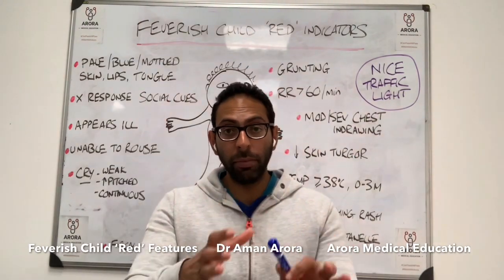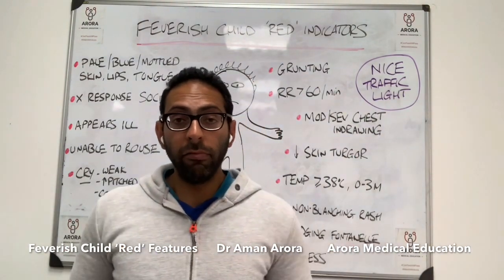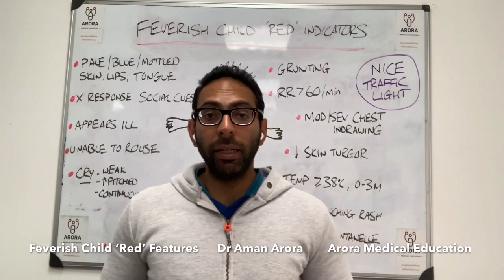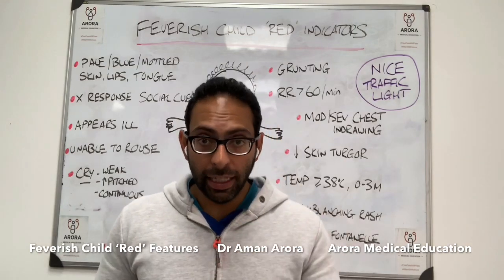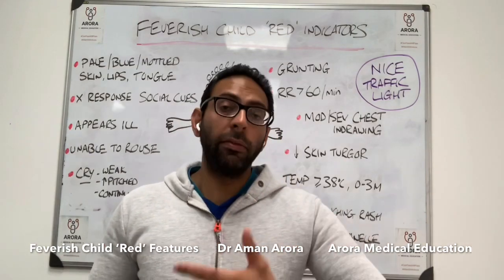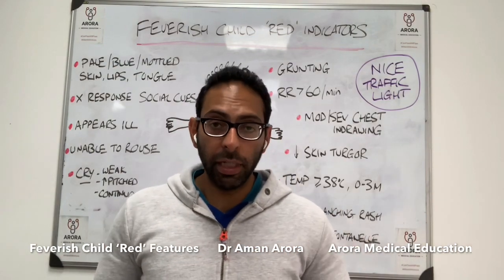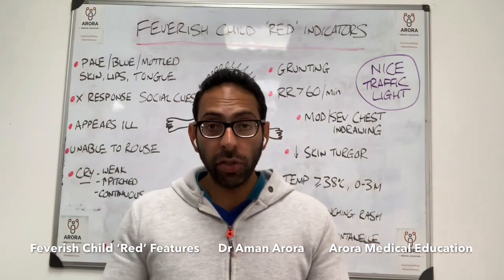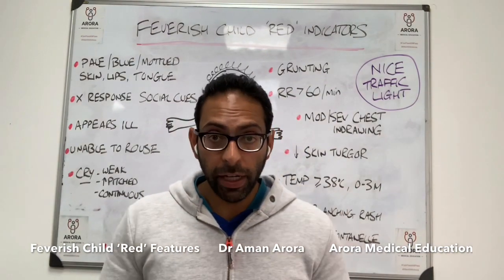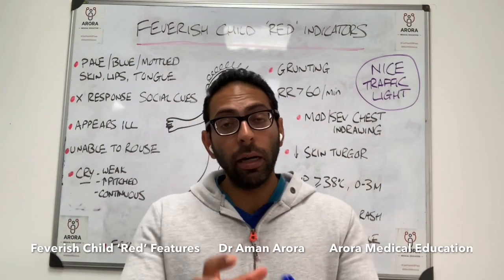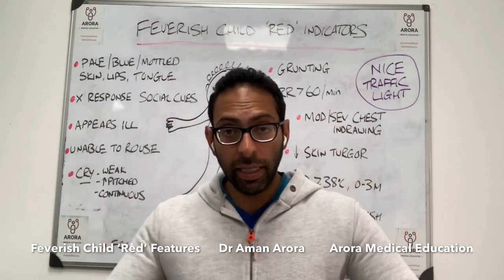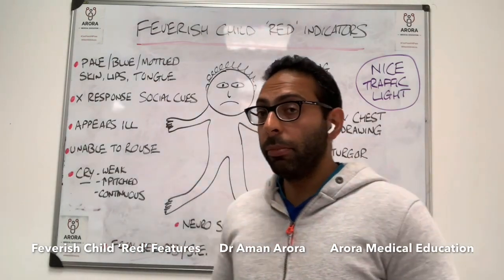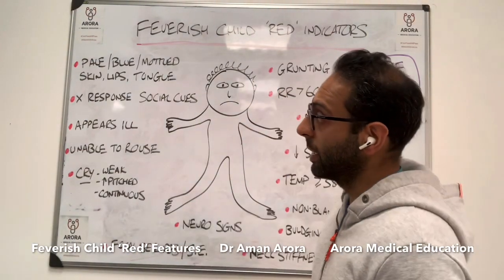You have green, you have amber, you have red. Red indicates a potentially life-threatening condition that should be seen in A&E urgently via emergency ambulance. If you get any questions in the exam, make sure you look for these red features. A lot of them are self-explanatory, they make sense, but it's worth going through them before your medical exam.